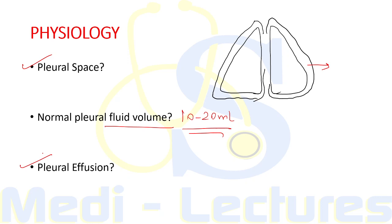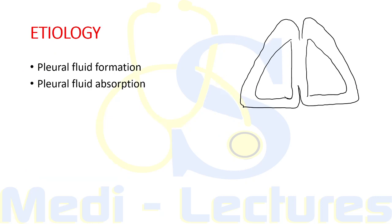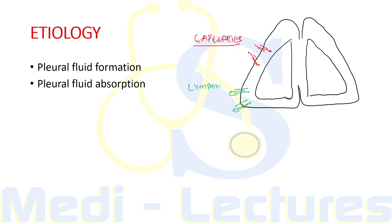Normally, pleural fluid is formed by the parietal pleura through the capillaries present in the parietal pleura, and it is reabsorbed back by the parietal pleura itself through the lymphatics present in the parietal pleura.